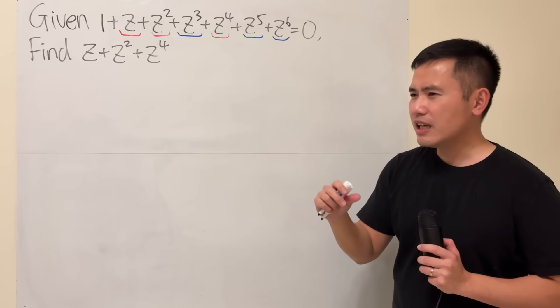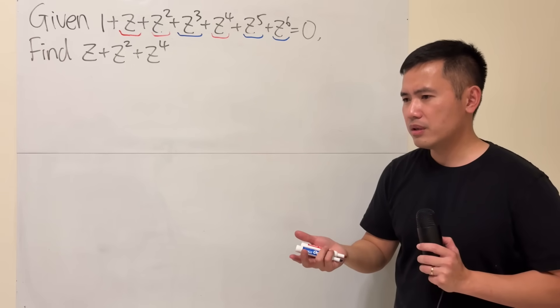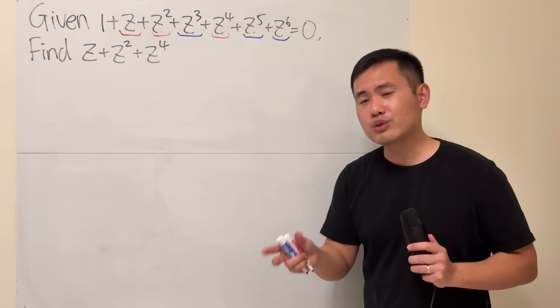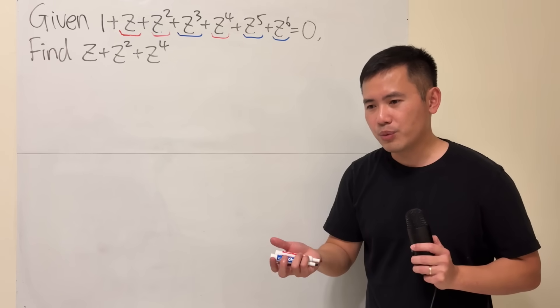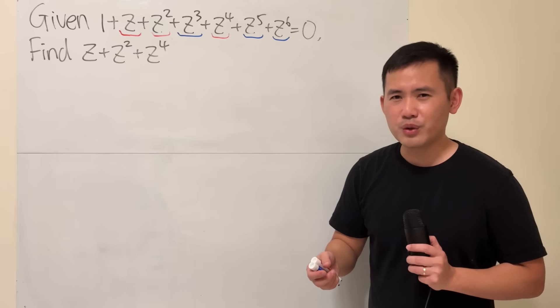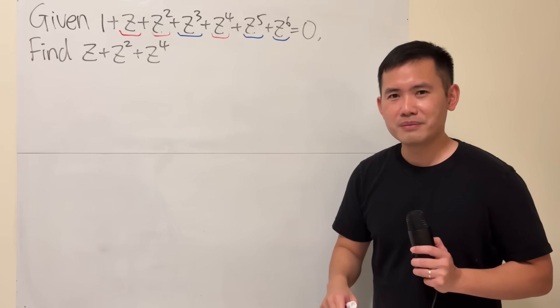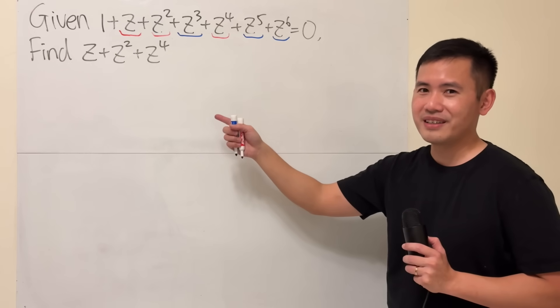Then we can see that the red part plus the blue part is just equal to negative one. We have the sum of two things equal to a number. If we can find the product of those two things to be another number, then we can use Vieta's formula or just solve a system of equations. We'll get a quadratic equation. That's the key to do this right here.